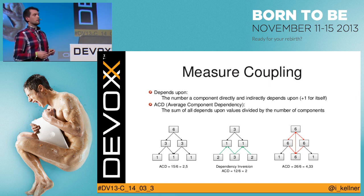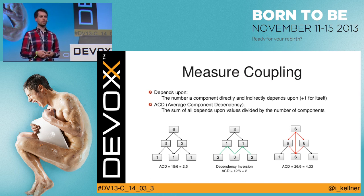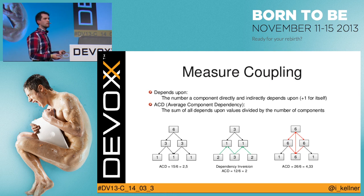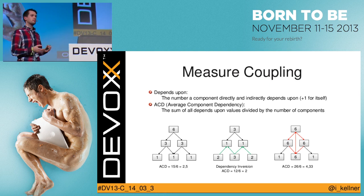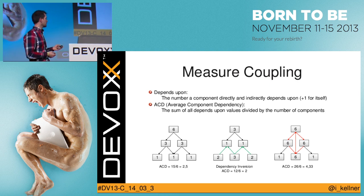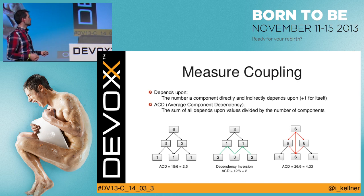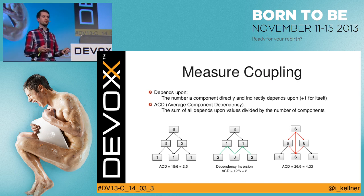A good way to measure software erosion is to measure coupling. One metric we really like is the Average Component Dependency, defined by John Larkos. It's calculated by computing the number of components a single component depends on directly or indirectly. In this example with six components: one component depends on two others plus itself — value three; the top one depends on five others plus itself — value six. You add all these values and divide by total components to get the coupling value. By applying the dependency inversion principle, you can refactor the code base and reduce the average component dependency from a higher value down to two.